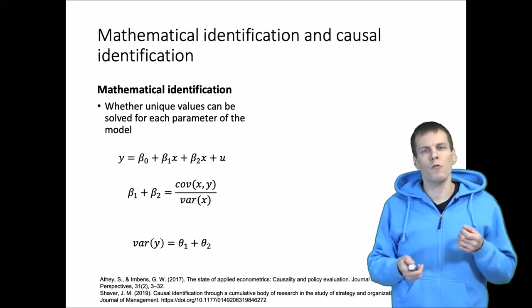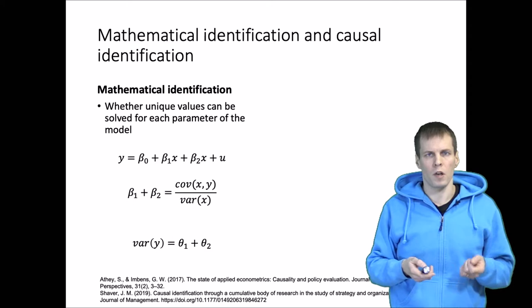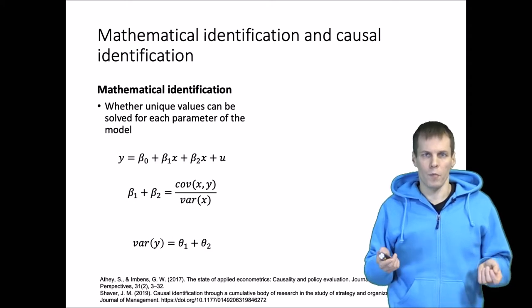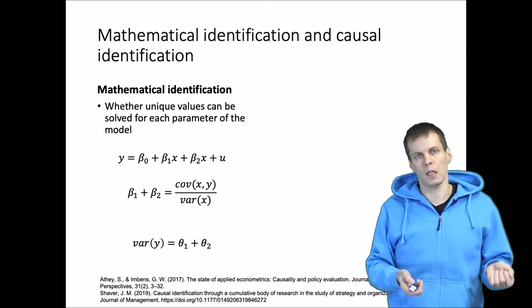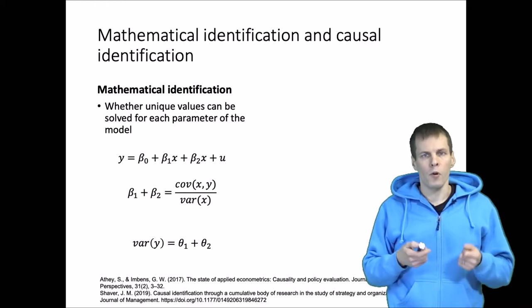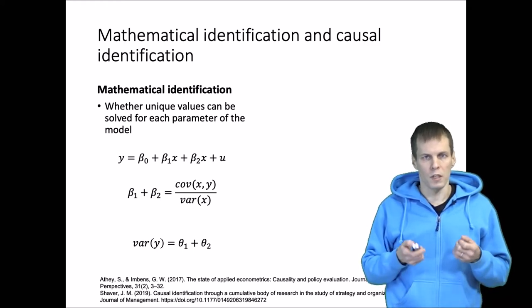But we cannot really know which one of beta 1 or beta 2 is larger or whether one of them is 0 or one is negative and one is positive. That is impossible to determine using this model.